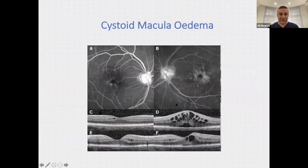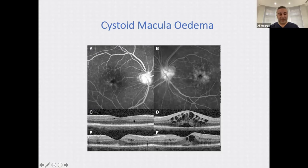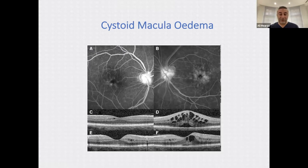Cystoid macular edema typically occurs around four to six weeks if it's going to occur. Patients get fluid at the back of the eye which impacts vision, diagnosed with a retinal scan showing fluid bubbles within the macular area. We give a three-month course of steroids and non-steroidal anti-inflammatory drops, and the majority resolve without any consequence to vision.